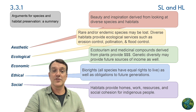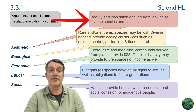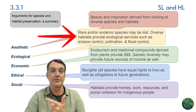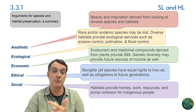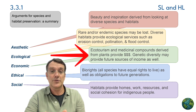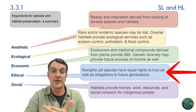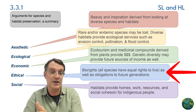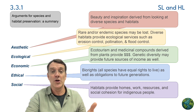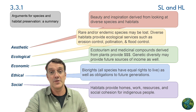To summarize the arguments for species and habitat preservation: aesthetic arguments focus on beauty and inspiration derived from diverse species and habitats; ecological arguments highlight how diverse habitats provide services like erosion control, pollination, and flood prevention; economic arguments emphasize ecotourism, medicinal compounds, and genetic resources; ethical arguments consider bio-rights and obligations to future generations; and social arguments recognize that habitats provide homes, work, resources, and social cohesion for people, particularly indigenous communities.